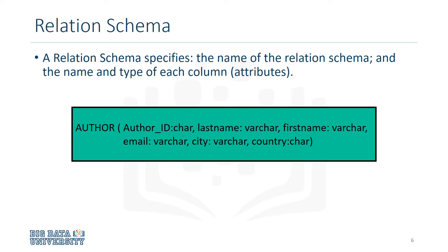Author is the name of the relation. Author ID is an attribute which can hold the data type CHAR, which is a character string of a fixed length. Likewise, last name, first name, email, and city have the data type VARCHAR, which is a character string of a variable length. The last attribute, country, also has a data type of CHAR. This constitutes the relational schema.